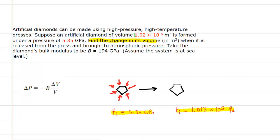We also know the volume of the diamond right here. In order to determine the change in volume, we're going to have to use the following relationship. The change in pressure is equal to negative a quantity known as the bulk modulus, which is given to us in the problem, multiplied by the change in volume over the original volume of the object.